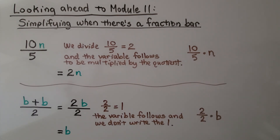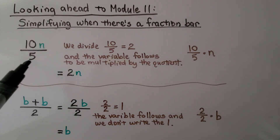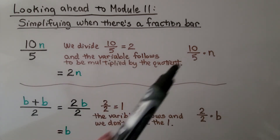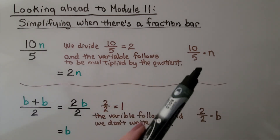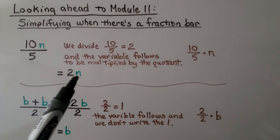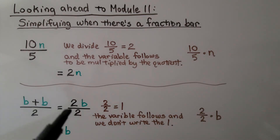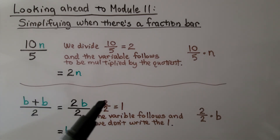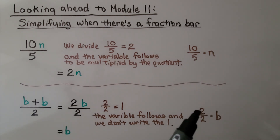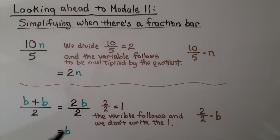Looking ahead to Module 11, this is simplifying when there's a fraction bar. We have 10n divided by 5: 10 divided by 5 equals 2, and the variable n follows along, giving us 2n. Here we have (b plus b) over 2, which is 2b divided by 2. The 2 over 2 equals 1 — same numerator and denominator — and the variable follows. We don't write the 1, so we just write b.